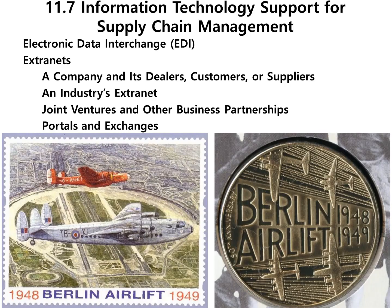Section 11.7 is about IT support for the supply chain management process. The first technology is electronic data interchange, or EDI — the concept of businesses electronically communicating information that was traditionally communicated on paper, such as purchase orders and invoices. Technical standards for EDI facilitate transactions without special arrangements. EDI is a communication standard that enables business partners to exchange routing documents electronically; initial investment is a limitation of EDI. The Berlin Airlift is the earliest known application of EDI. Think of EDI as a computer-to-computer email that makes transactions without human involvement.